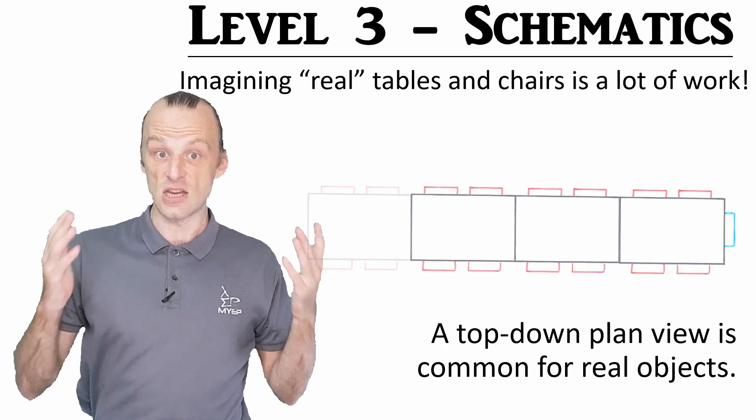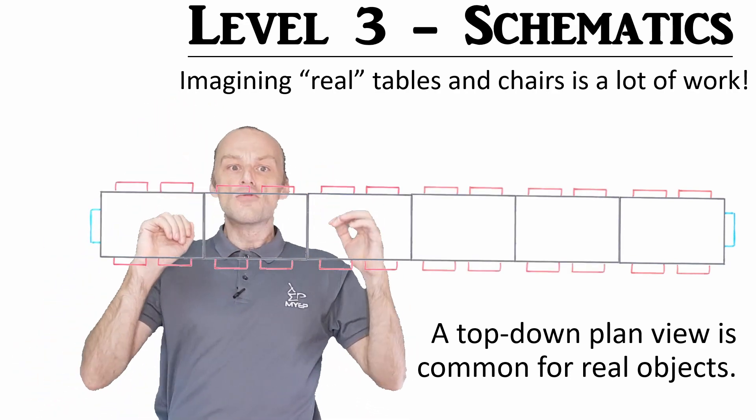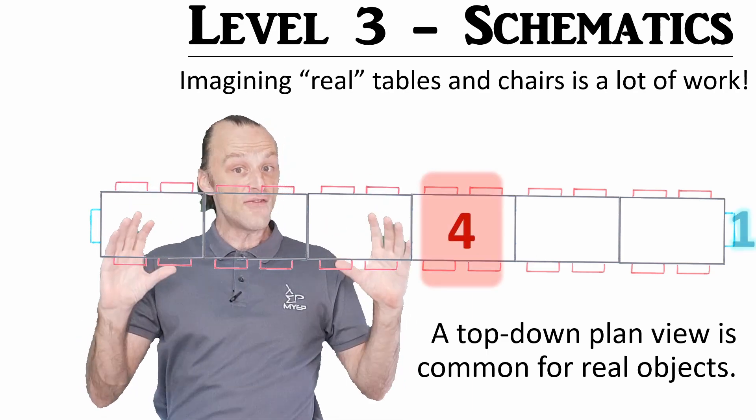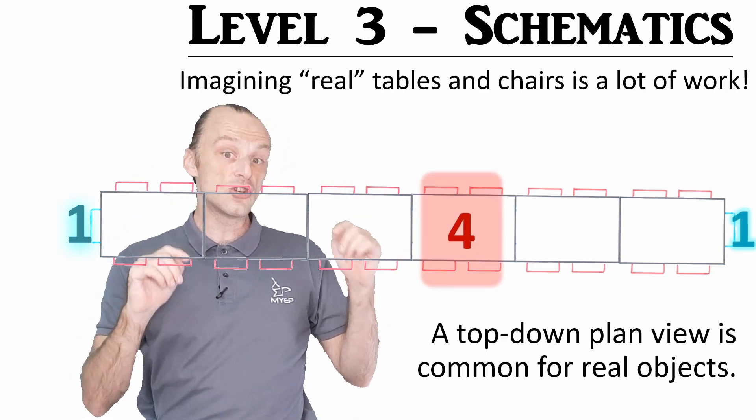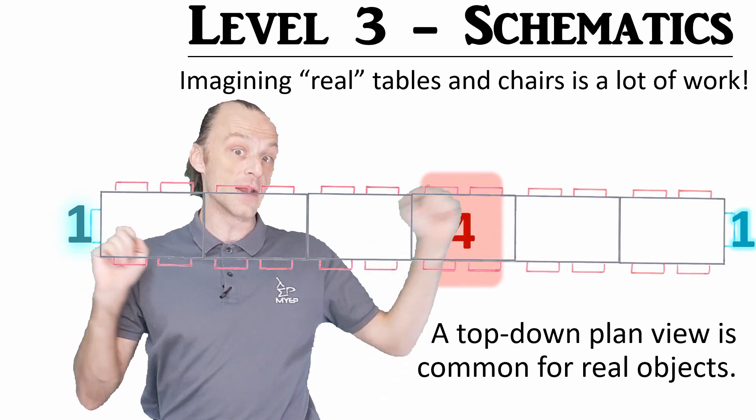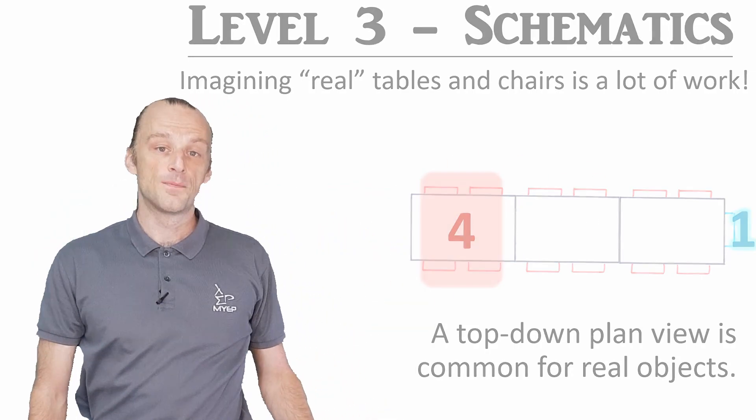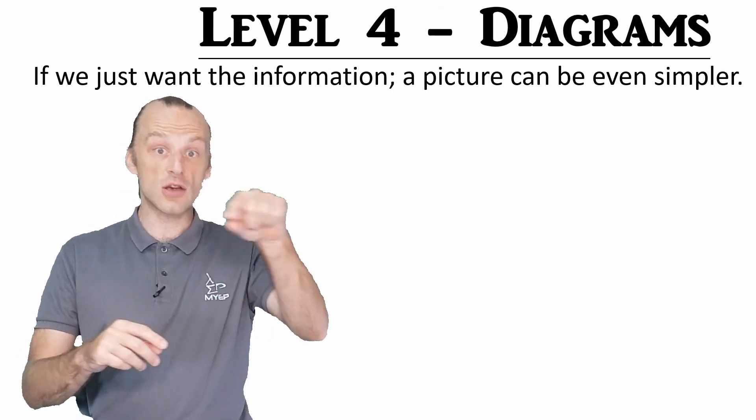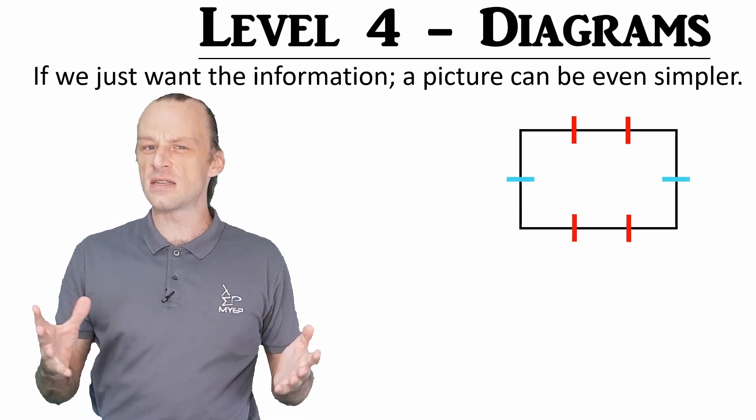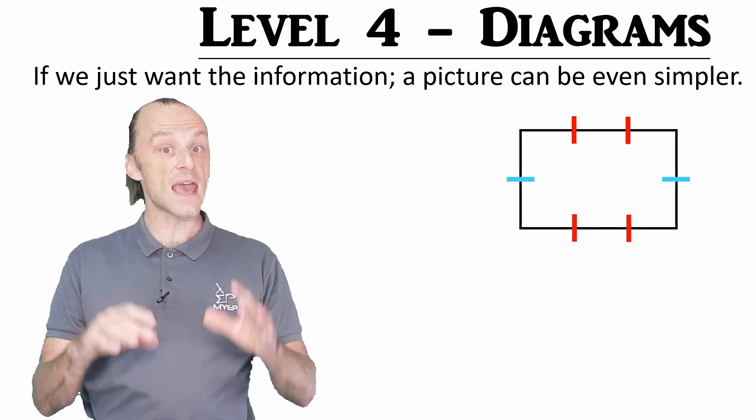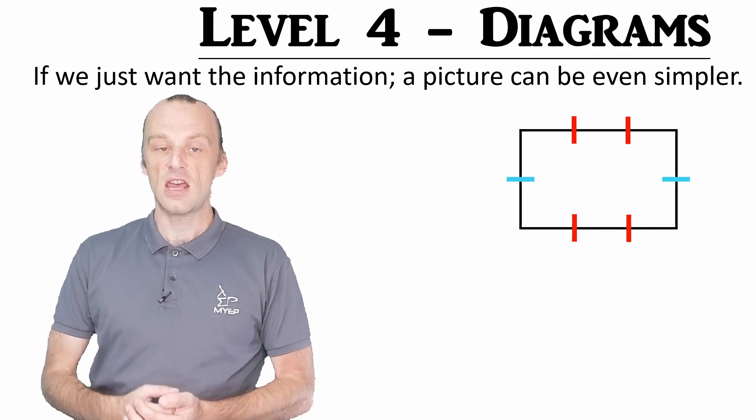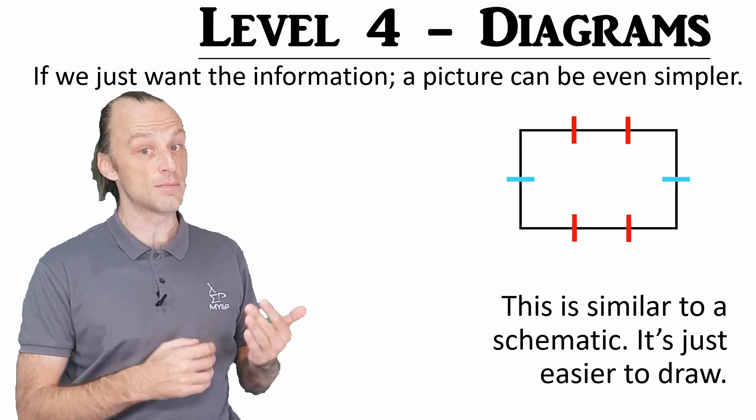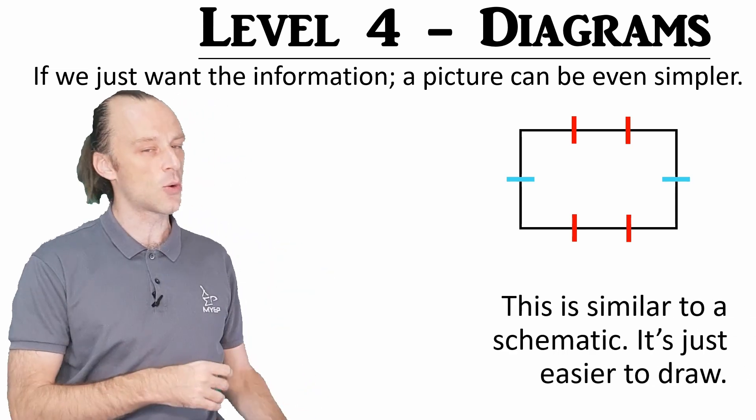We can then add these into rows, remembering to take out the end chairs, and we can see that every table has four chairs, and then the two ends of the row have one chair each. If we want to be quick, we can just show the chairs as marks around the table. We don't need to see them as objects in space. We only care about the numbers here. If we do this, it doesn't make anything easier to understand than a simple schematic. It's just a bit quicker to draw.